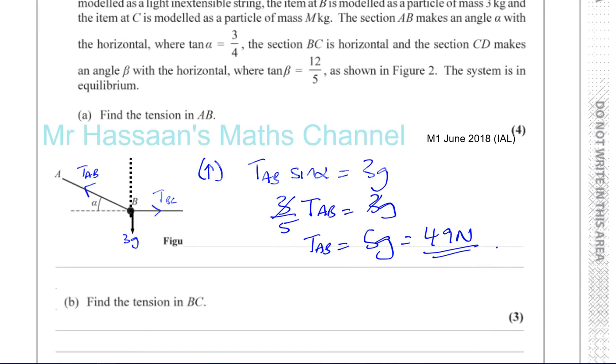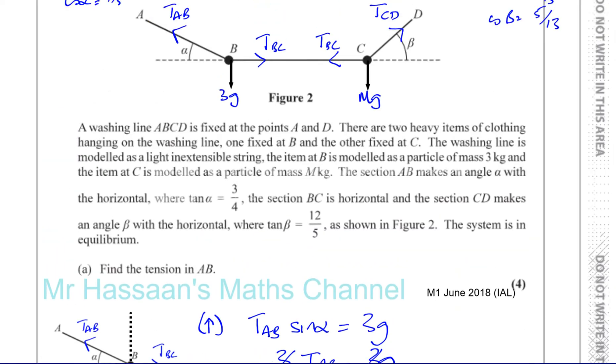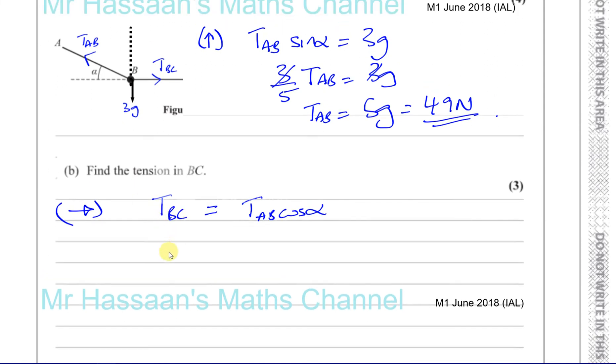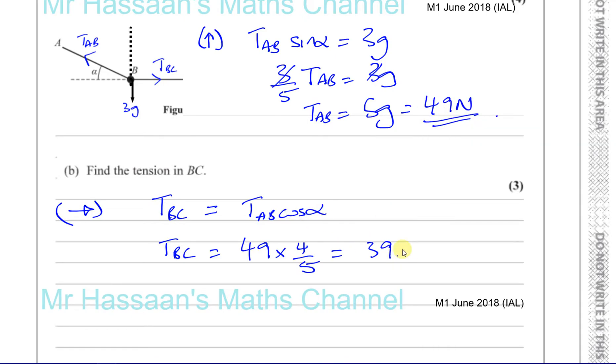Then it says find the tension in BC. So we can use the same diagram here and just resolve the forces horizontally. So we know that the tension in BC is equal to the tension in AB times cosine of alpha. Times the cosine of alpha. And we know the cosine of alpha is four-fifths. So we can say the tension in BC is going to be 49 times four-fifths. Which gives you 39.2 Newtons.